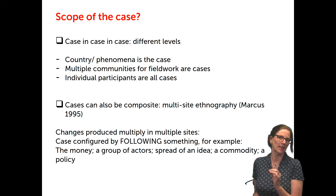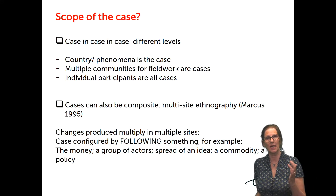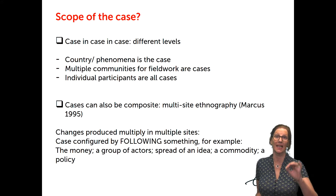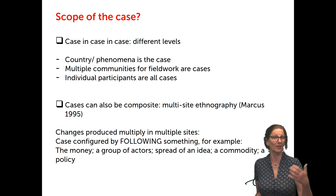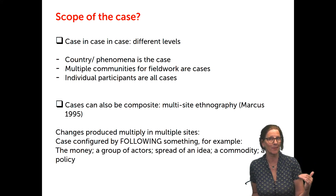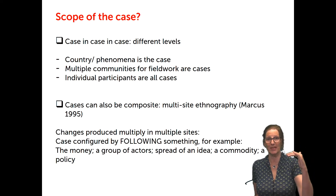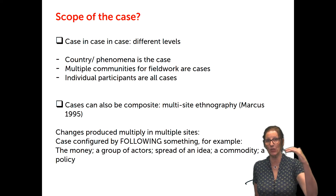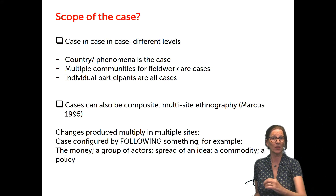And then within that community you cannot talk to everybody, so you select your participants — and you might say that every individual participant is again a case. You will end up saying this research is built on 20 cases, meaning 20 stories, 20 households, 20 people interviewed, whose stories build up to make my case study. When we talk about 'this is my case,' we usually talk about different levels, and we must be clear what we mean: are we talking about the bigger case, the case of the community, or the case of the people we interview?